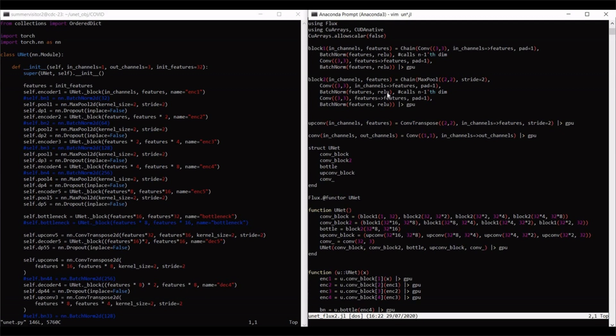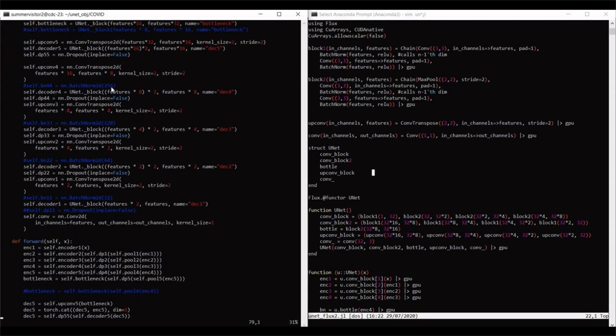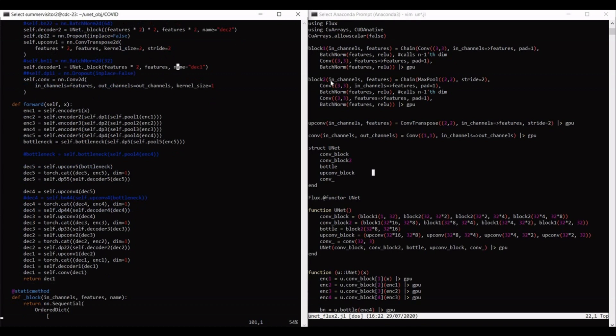As you can see, I made extensive use of structs to construct the upsampling and downsampling paths of UNET. With a side-by-side comparison of Flux and PyTorch code, I think that Flux is just as intuitive, if not more so, than PyTorch.